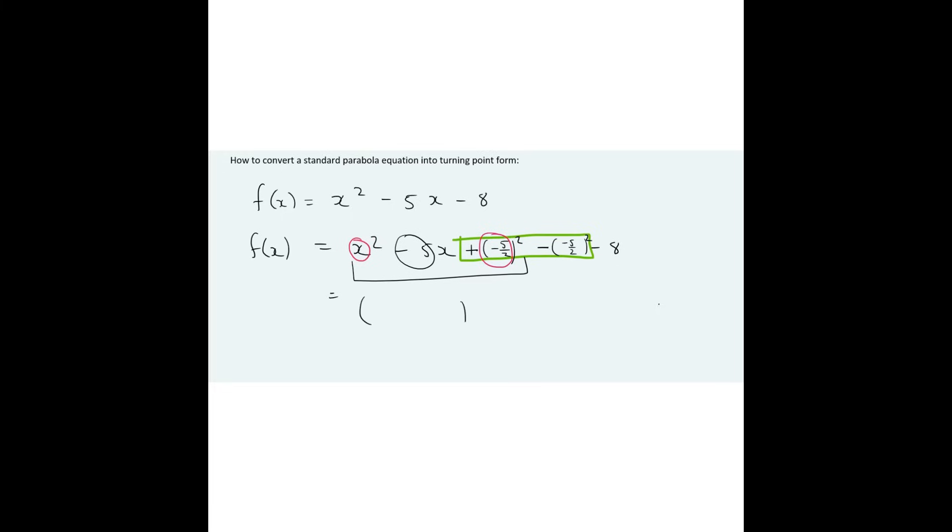So you're going to open up a bracket like that, and it's going to be an x and a minus 5 over 2. And then this last part here, you just put on the calculator, and that'll give us minus 14.25. And there we're done.